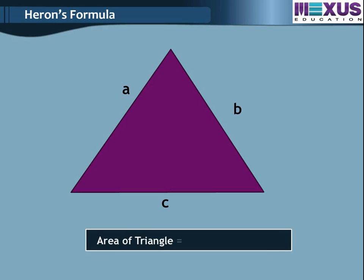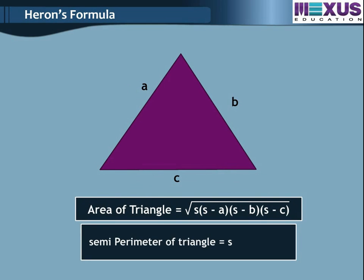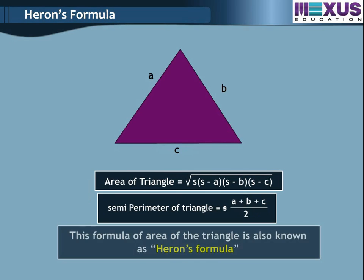Area of triangle equals square root of S into (S minus A) into (S minus B) into (S minus C), where A, B and C are the sides of the triangle. S equals the semi-perimeter, that is half the perimeter of the triangle, equal to (A plus B plus C) divided by 2. This formula is also known as Heron's formula.